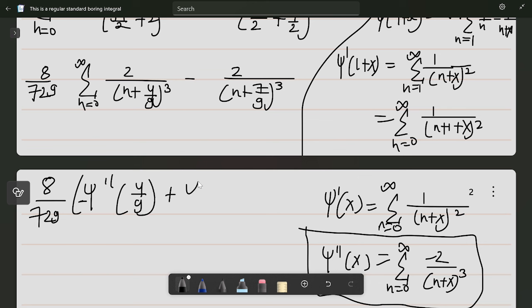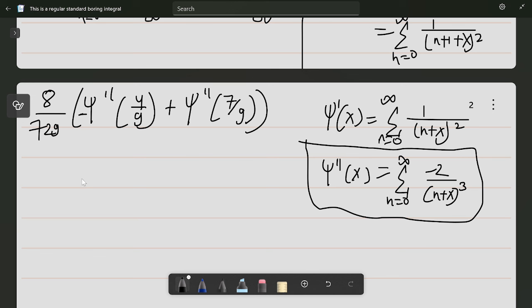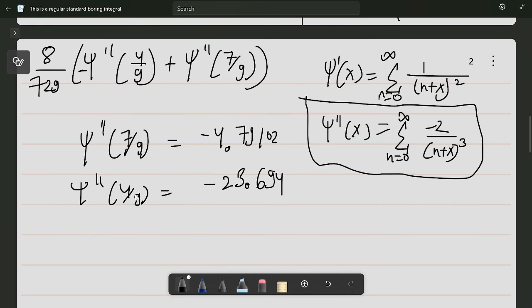We know that ψ''(7/9) equals -4.79102 and ψ''(4/9) equals -23.694.